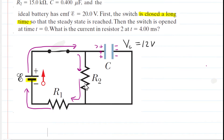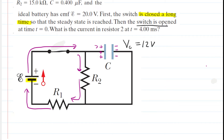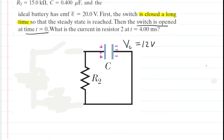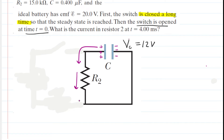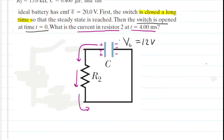So we can say the potential across the capacitor plates is also 12 volts once it has been fully charged up. The capacitor is fully charged with a potential difference of 12 volts. Next, the switch is now opened at a time labeled T equals zero. Once the switch is open, current can no longer flow through that portion of the circuit, so we eliminate it. What we're left with is basically an RC circuit — a resistor and a charged capacitor. Charges start coming off the plate and flowing around, creating a current through R2. We're looking for the current in R2 not at time zero, but four milliseconds later.